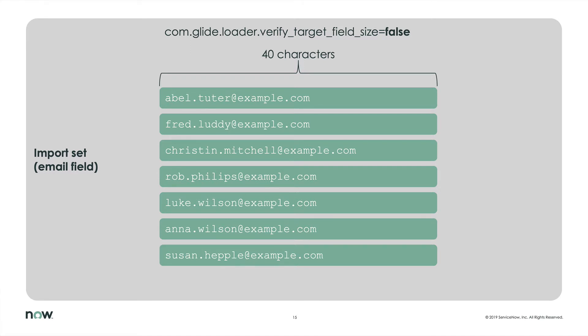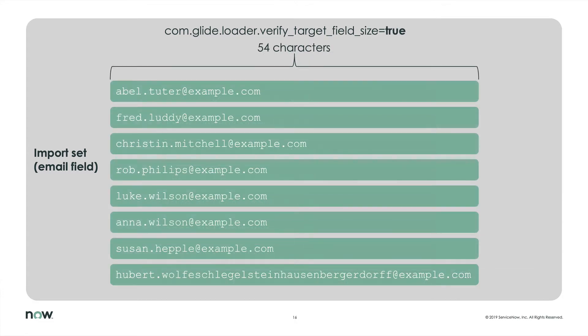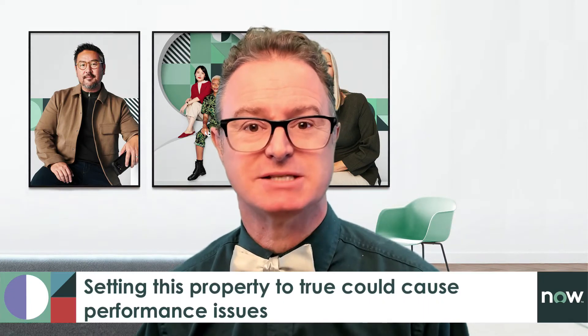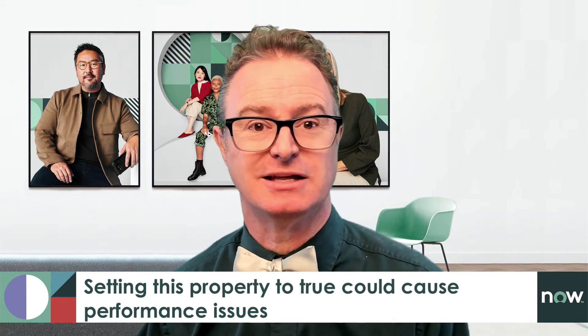For example, if we imported 20 rows of users and nobody's email address was longer than 40 characters in that test set, the length of the field would be the default string length of 40 characters. However, if later the system encounters an email longer than 40 characters, it would truncate the email address if this property were not set or set to false. By setting it to true, the email field on the import set will be adjusted to be just long enough for the longest address it encounters. But be aware, this could have a performance impact since the database needs to do an alter operation every time it changes a field length. If we have a lot of import set rows in our system, it could take a while to do each alteration.